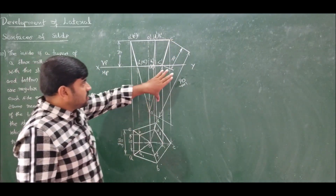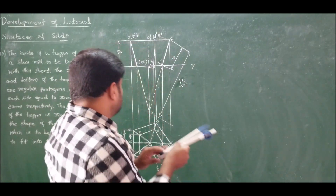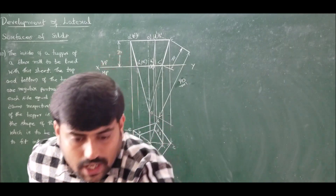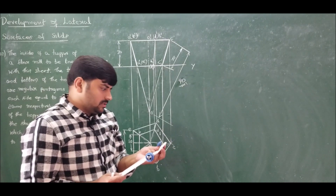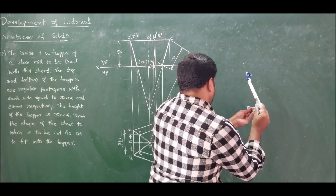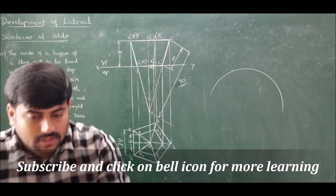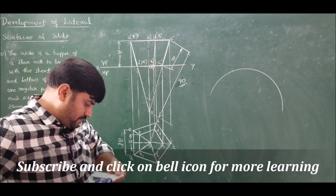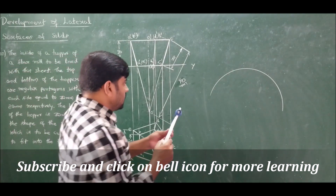This completes the sketch. Now begin the development. First draw an arc of radius 90 mm (the true slant edge) for an unknown angle. Measure radius 90 mm and draw the arc for the full development sweep.